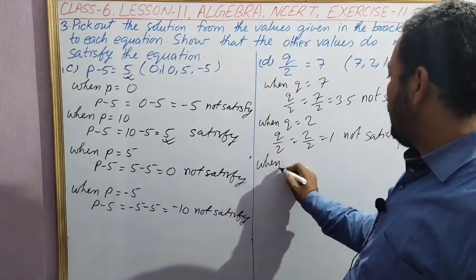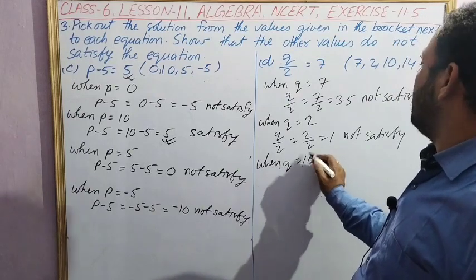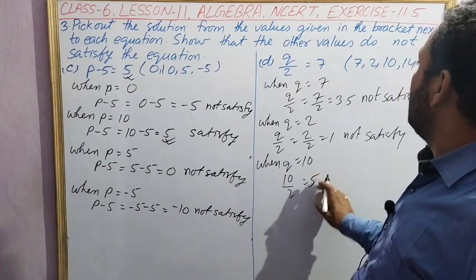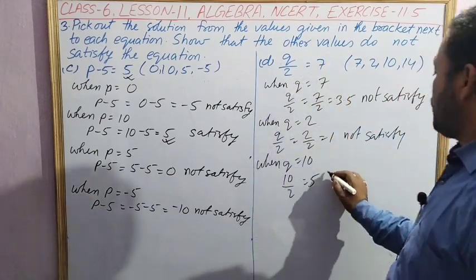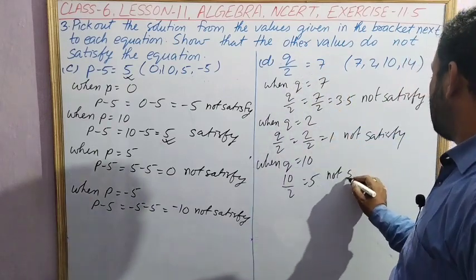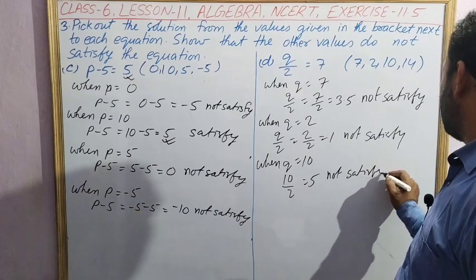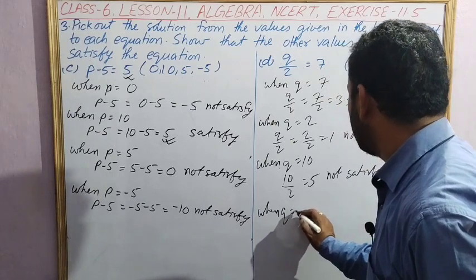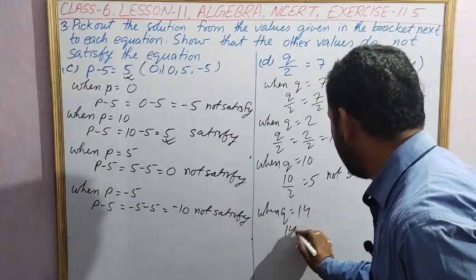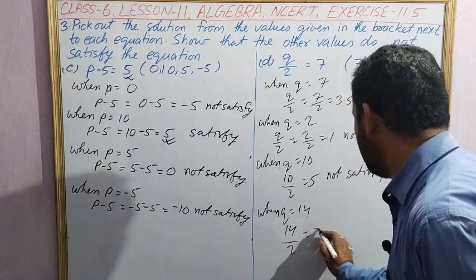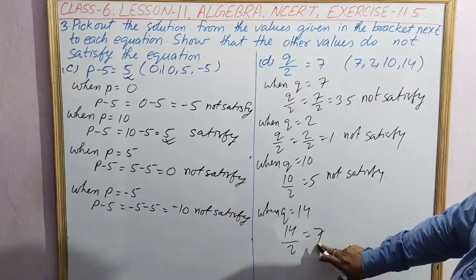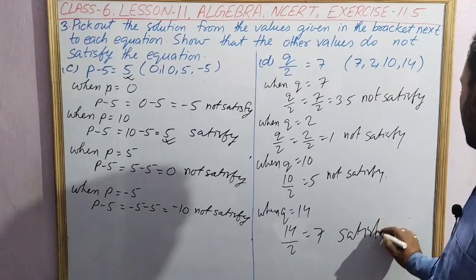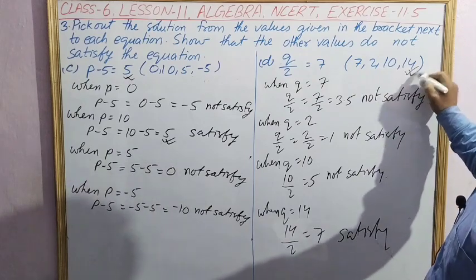When q equal to 10, put the value 10: 10 by 2 is 5. Right hand side is 7, so this one is also not satisfying. Not satisfy. Last value: when q equal to 14, 14 divided by 2 is equal to 7. Right hand side and left hand side is same, so this one satisfies the equation. This one is the correct answer.